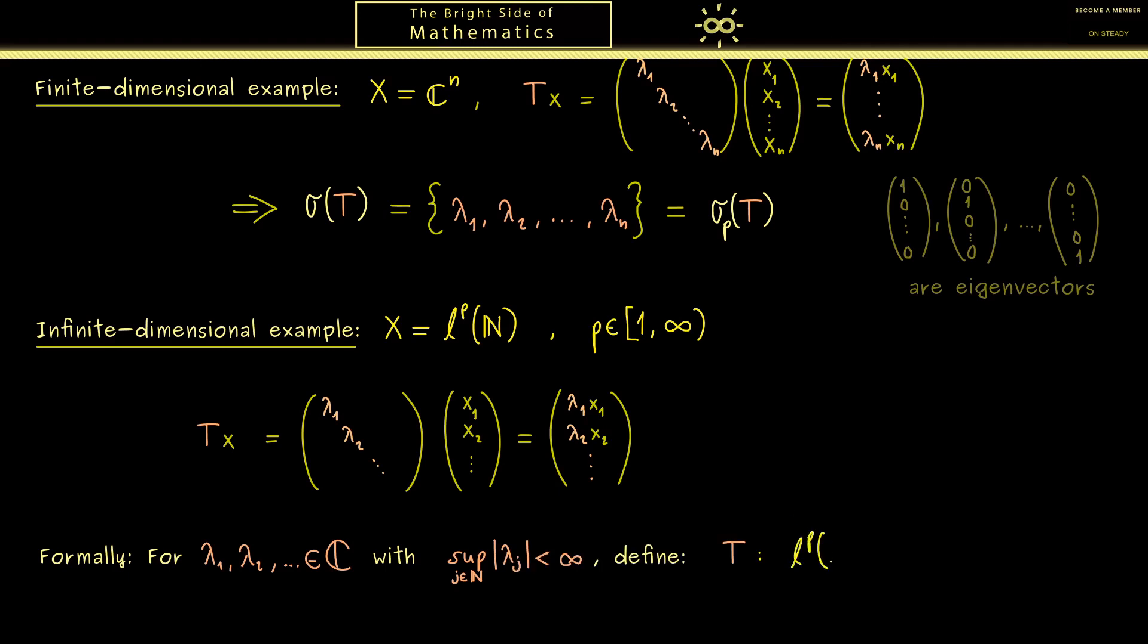With this we then define T as a bounded linear operator from ℓᵖ into ℓᵖ, simply by setting the jth component of Tx as lambda j times xⱼ. Of course this fits in with our definition from above, but now you see we need this condition to get a bounded operator.